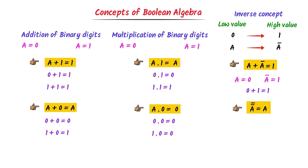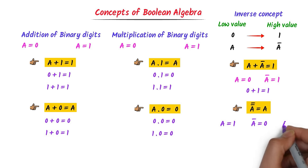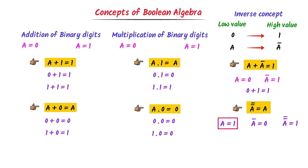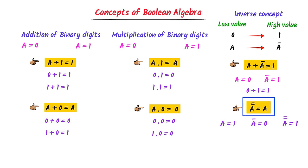Fourth rule: a double-bar equals a. For example, let a equal 1. I inverse the value of a and get a-bar equals 0. I inverse again and get a double-bar equals 1. The initial value of a is 1 and a double-bar is also 1. Hence, a double-bar equals a. The simple trick is: always cancel the two bars.